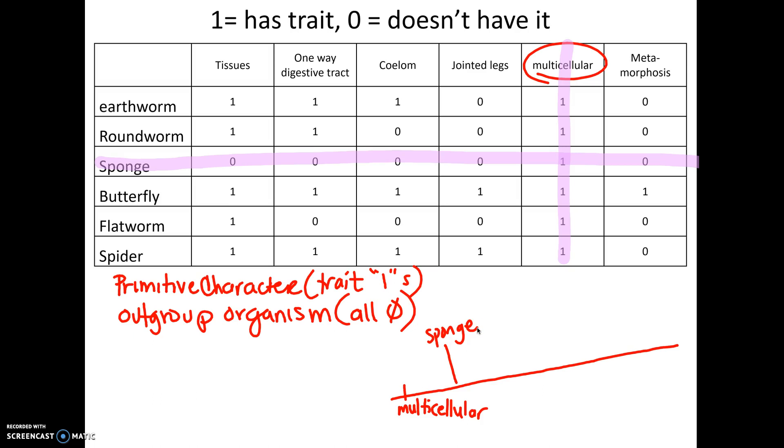Now that I've crossed off the sponge, I'm going to go back to traits again. So is there a trait everybody else has now that the sponge is gone? And there is tissues. So that's going to be my next trait, tissues.